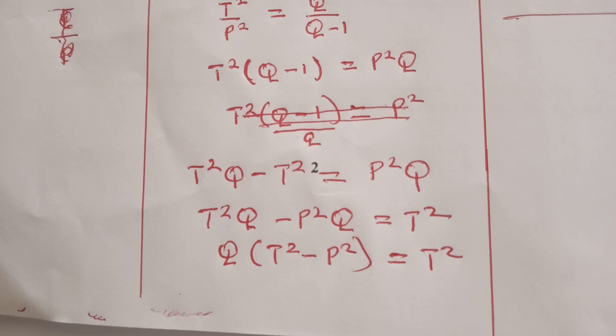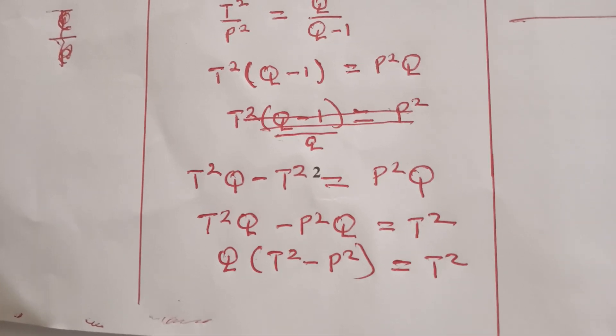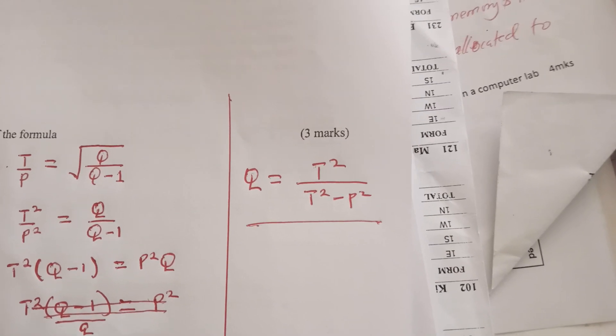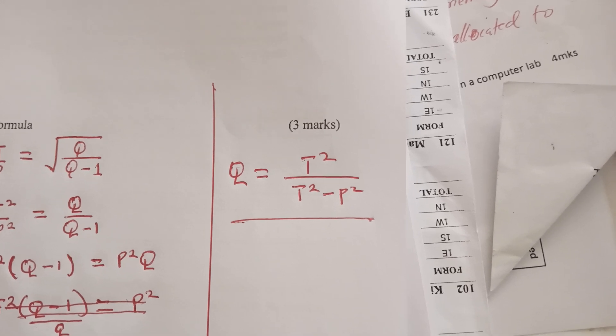Then we are going to divide both sides by T squared minus P squared. And we will get Q to be T squared over T squared minus P squared.